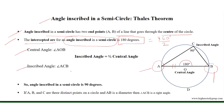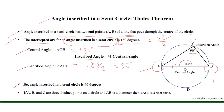The inscribed angle from the same two points is ACB, where C is a point on the circumference of the circle. Since the central angle is two times the inscribed angle and the central angle equals 180 degrees, the inscribed angle equals half of 180 degrees. Therefore, angle ACB equals 90 degrees.